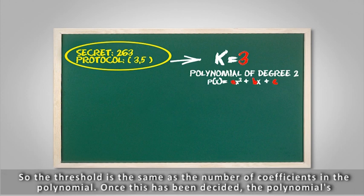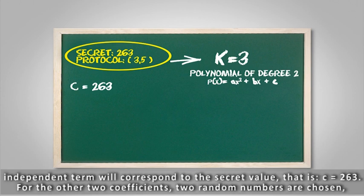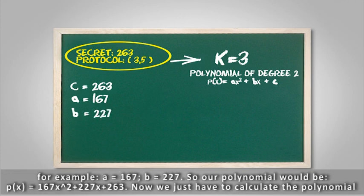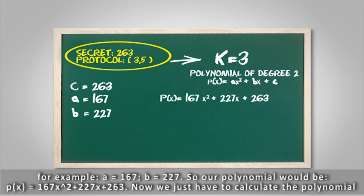So the threshold is the same as the number of coefficients in the polynomial. Once this has been decided, the polynomial's independent term will correspond to the secret value, that is, c is equal to 263. For the other two coefficients, two random numbers are chosen, for example, a equal 167 and b equal 227. So our polynomial would be p(x) = 167*x^2 + 227*x + 263.